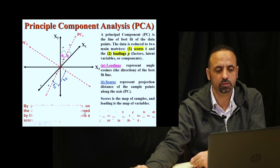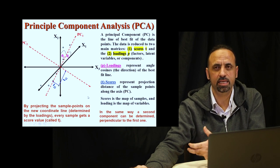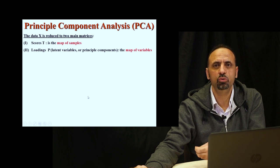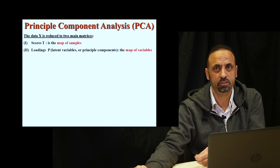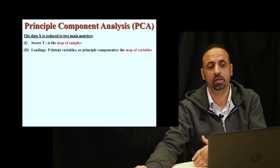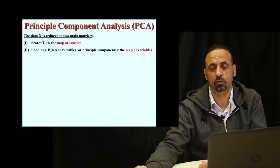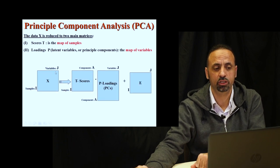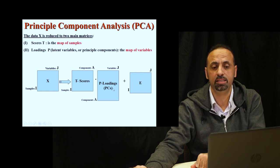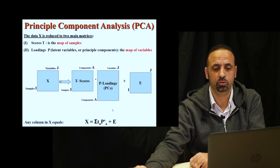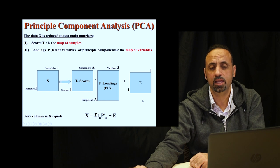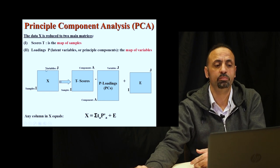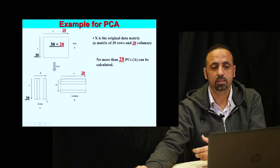In general, our data matrix X is decomposed into two matrices: one called loadings, related to the principal components, and another called scores. The scores make a map of the samples, and the loadings make a map of the variables or wavelengths. If you multiply scores by loadings and add the residual error, you recover the original data.